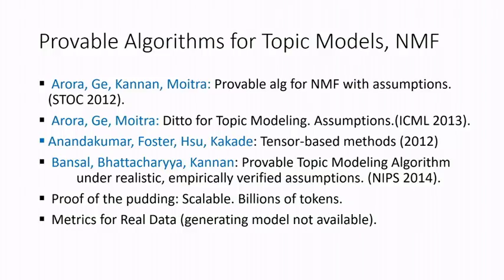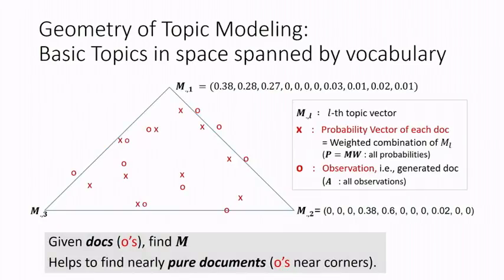Our model first assumes a small number of linearly independent basic topics — the corners of a triangle (simplex). We then have many more topics which are convex combinations of these basic topics, which we call edge topics. If there are D=50,000 words, the three topics are corners of a triangle in 50,000 dimensions. The hidden model generates documents as crosses (weighted combinations of topics), and documents (circles) can actually fall outside the triangle due to variance. I give you the circles and want you to find the corners.